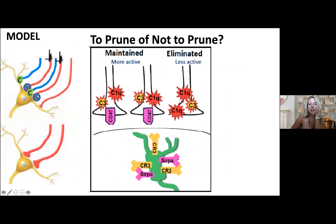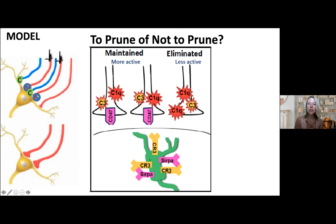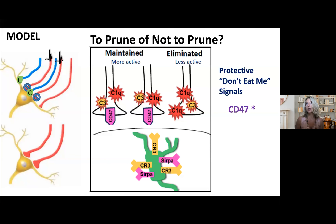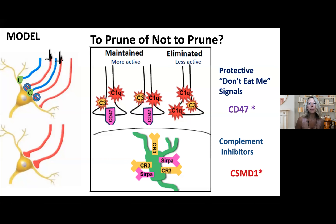One working model is that microglia read out a combination of cues: they preferentially engulf less active inputs tagged by eat-me signals and phosphatidylserine, while being prevented from engulfing stronger synapses that express don't-eat-me signals like CD47. Much like the immune system where a macrophage reads self versus non-self cues, we've shown many of these molecules are also in the brain. We've also started looking at complement inhibitors that prevent aberrant complement activation in the healthy developing brain.